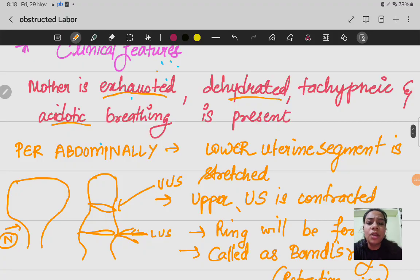Per abdominally, the lower uterine segment is stretched. The lower uterine segment is getting stretched and the upper uterine segment is contracted because baby is coming down. The lower uterine segment is stretching and the upper space is getting more space so it will contract. A ring is getting formed.